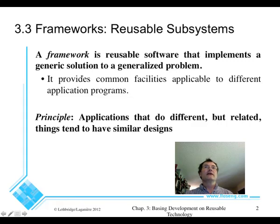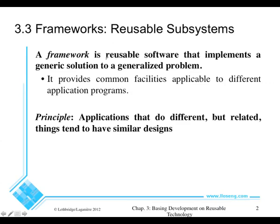A framework is a reusable system that implements a generic solution — not a specific solution, but a generic solution to a particular problem. It allows you to do certain things that that problem demands without having to write the code for that. There are many different kinds of applications that do different but related things. For example, frequent buyer or loyalty programs all do the same kind of thing: you stack up points for a purchase, and as you get more points, you can use those points to purchase flights or products. The idea is: why should people who want to create a new loyalty program re-implement all of the kinds of code they would need? People might write a framework which would allow people to do this more easily.